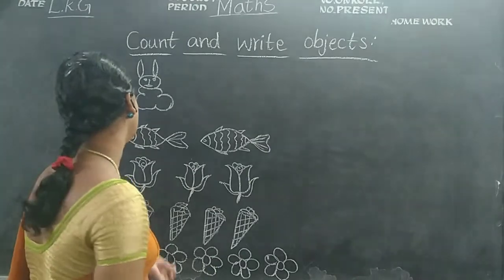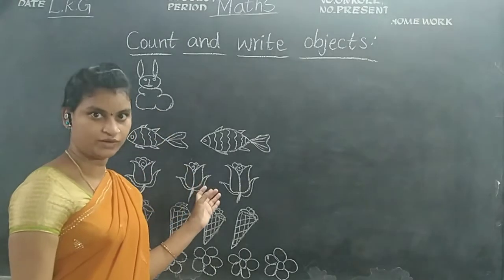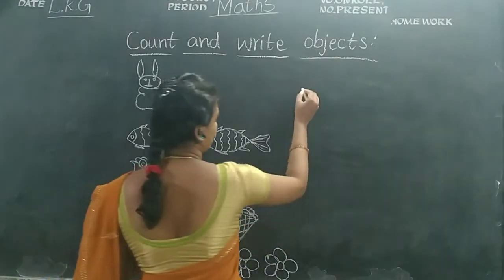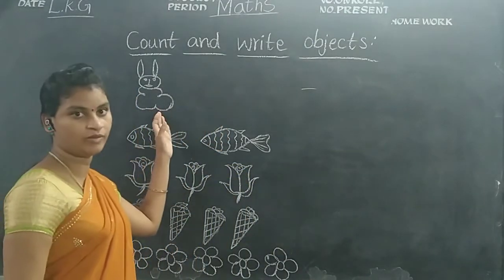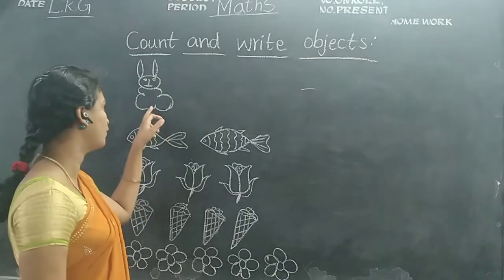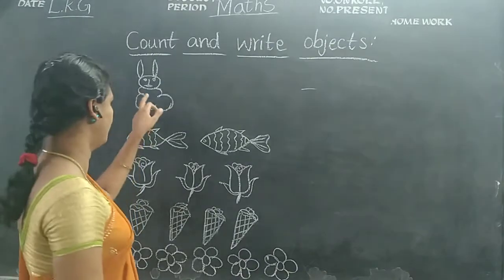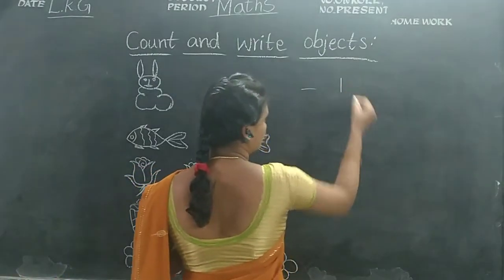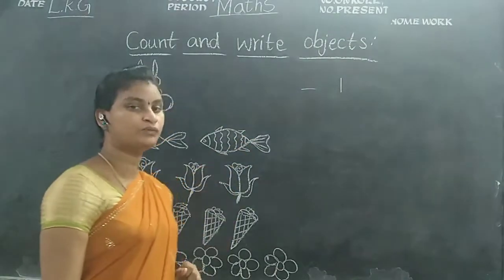Children, now we are going to count and write object. Okay children. See children. Look at the board. How many are there? Count. Only one rabbit. Okay children. You should write number one.